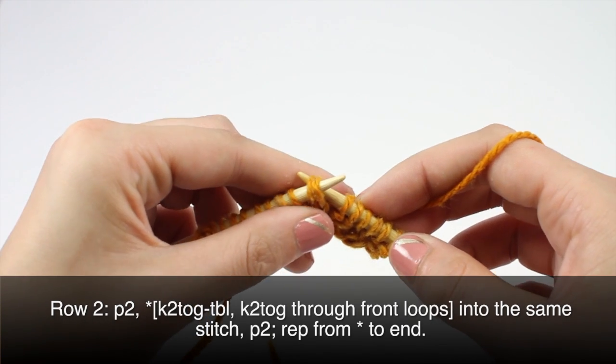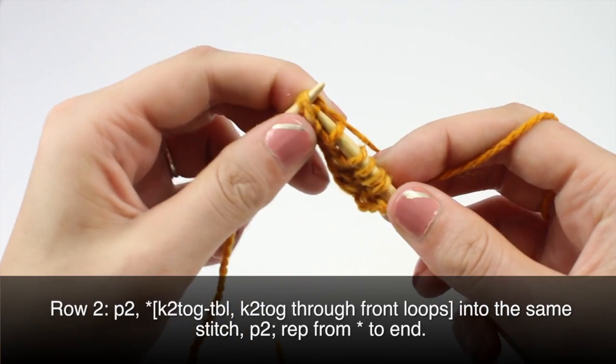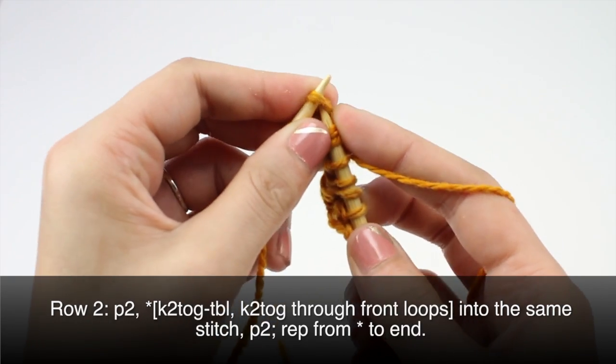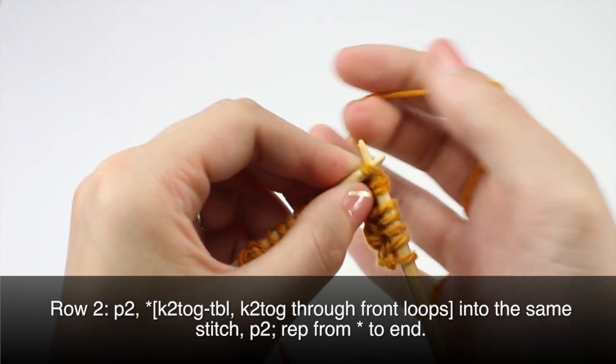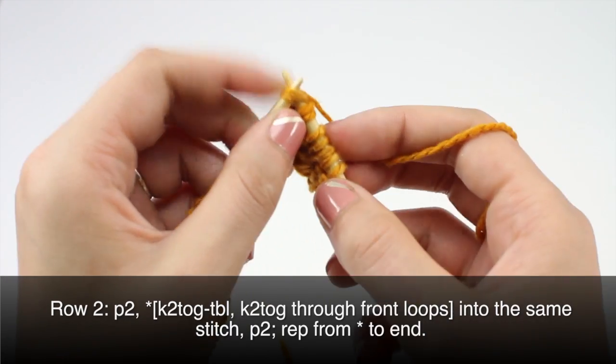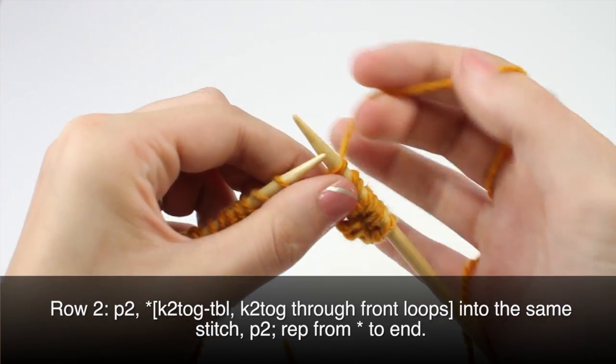So I'll do it one more time. We'll knit two together through the back loop. And before you pull them off, we'll knit the same two stitches again through the front loop. And purl two.